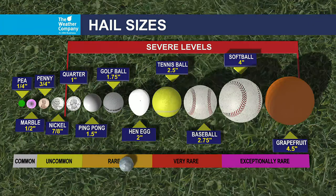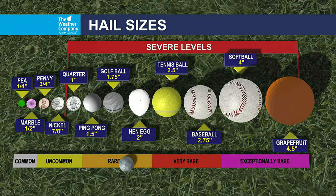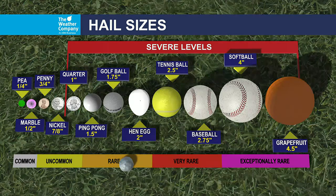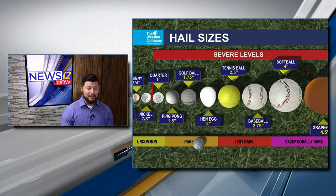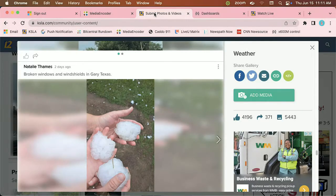When you start to get anything above tennis-ball to baseball-size — especially softball-size and grapefruit-size hail — that is when things get very, very dangerous. Now I want to show you some viewer photos because we have seen some impressive ones. These were submitted through the KSLA app. You can download the weather app and submit storm photos, hail photos, or anything that catches your eye.